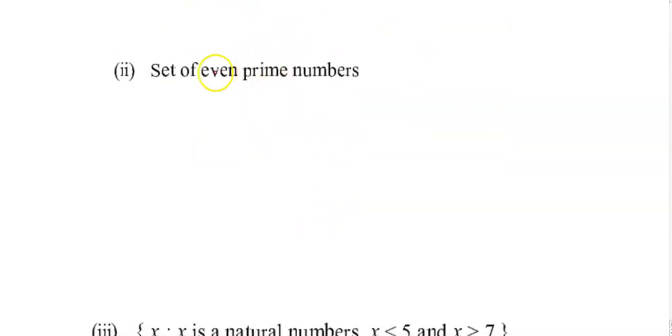Set of even prime numbers. There is only one prime number which is even, and that is 2. 2 is the only even prime number, so therefore this set is not a null set.